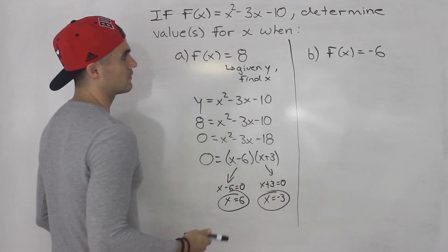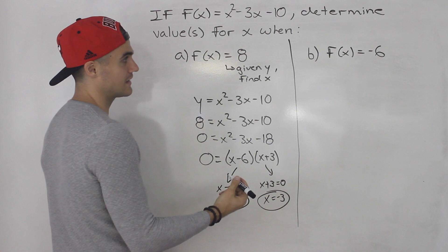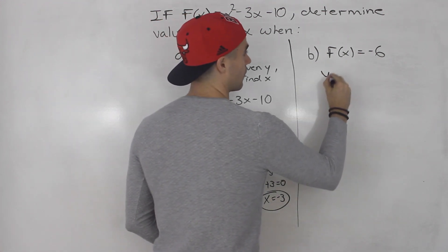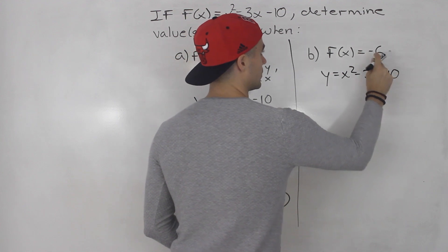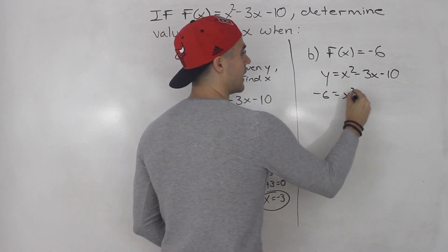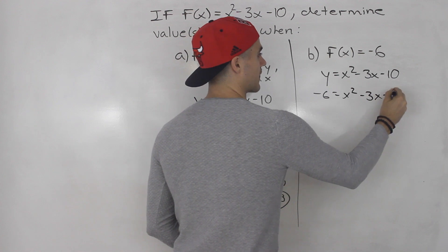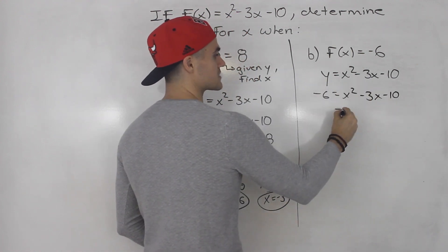Then same thing here. Find the x values when f(x) is -6. So again we got y equals x² - 3x - 10. Plug in -6 for y. And then we're going to solve for the x values.